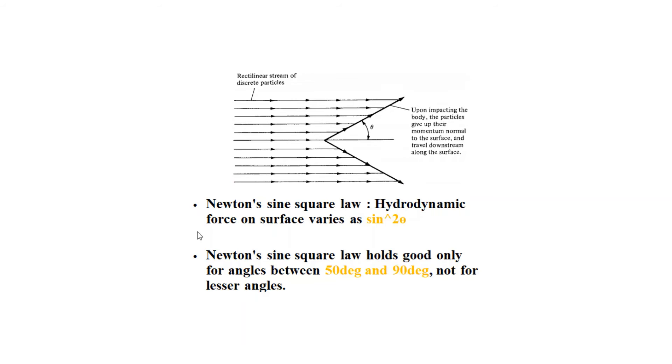Newton's sine square law: the hydrodynamic force on the surface varies as sin²θ. Hydrodynamic force is the force due to water and fluid. According to Newton's sine square law, this holds good only for angles between 50 and 90 degrees.